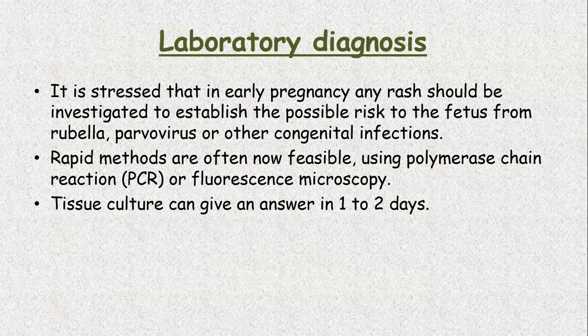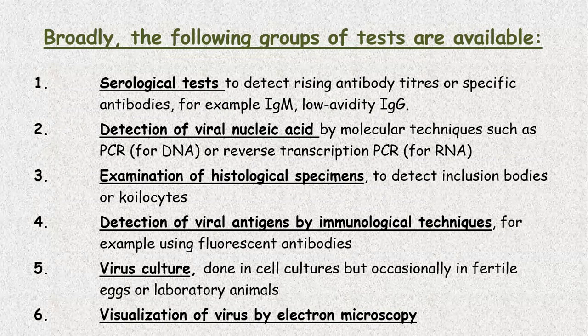Laboratory diagnosis. It is stressed that in early pregnancy, any rash should be investigated to establish the possible risk to the fetus from rubella, parvovirus, and other congenital infections. Rapid methods are now often feasible using PCR or fluorescence microscopy. Tissue culture, where available, can give an answer in one to two days. The commonly available investigations to detect viral infection: number one is the serological test to detect the rising antibody titers or specific antibodies, for example IgM and IgG. IgM usually suggests acute infection and IgG suggests a chronic infection.